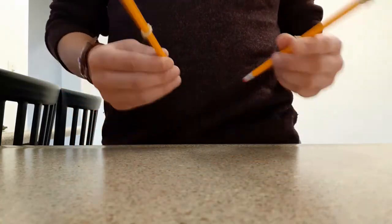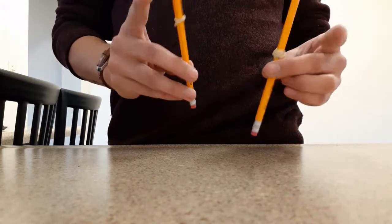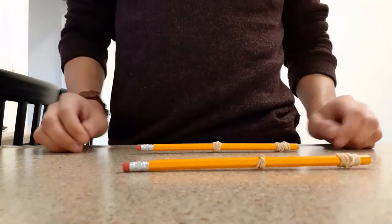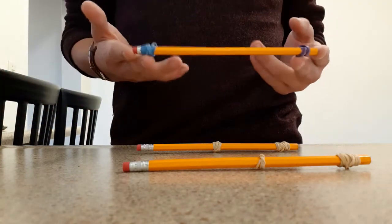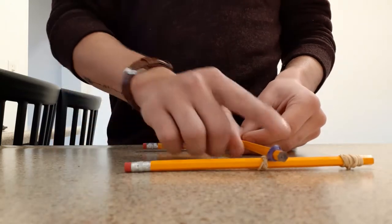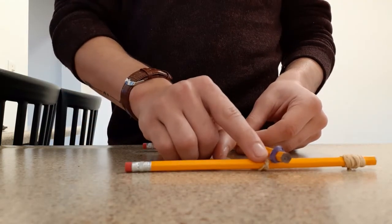Start by taking two of these rubber band pencil supports that we've made that have one rubber band in the middle and one at the top. Place them parallel to one another down here. Grab one of your supports that has one at either end but not one in the middle and place it right on top to where these rubber bands are outside of these ones.